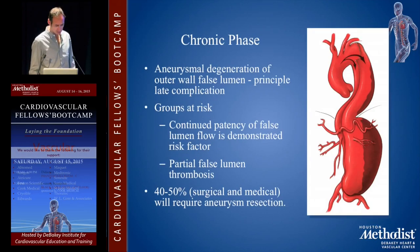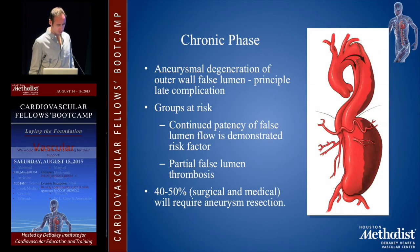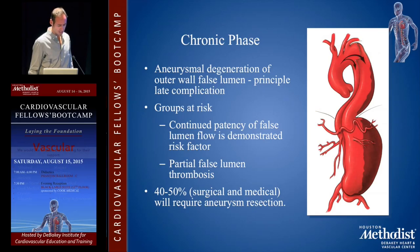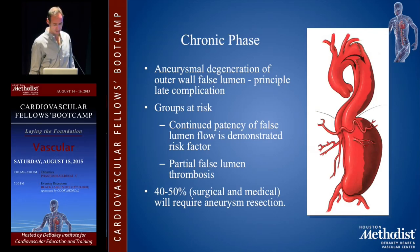In the chronic phase, aneurysmal degeneration of the outer wall and false lumen is the principal reason for complications and treatment. The groups at risk are those with continued patency of the false lumen flow, and partial false lumen thrombosis, which from the IRAD was shown to be one of the highest risk factors for expansion. Overall, 40-50% will require some form of treatment down the road.